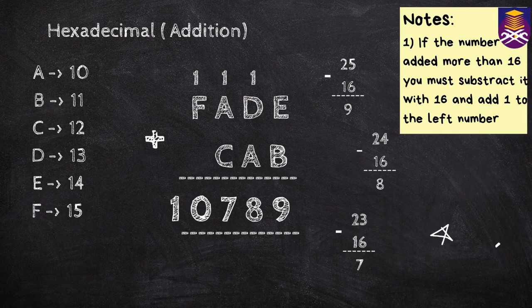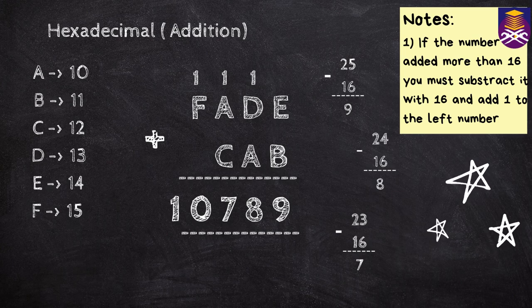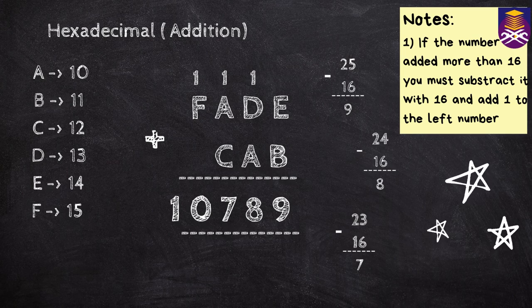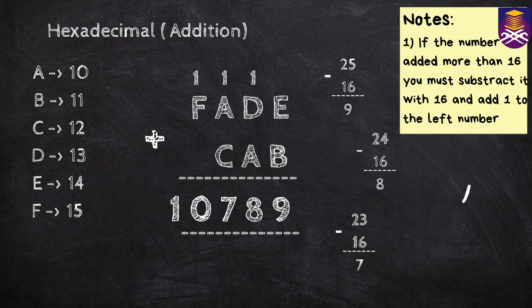Moving on to the hexadecimal addition, you must remember that if the number added more than 16, you must subtract it with 16 and add 1 to the left number. Such as the example, E is 14 and B is 11. So 14 plus 11 is 25. It's exceeded 16. So we must subtract it with 16 so we can get 9.